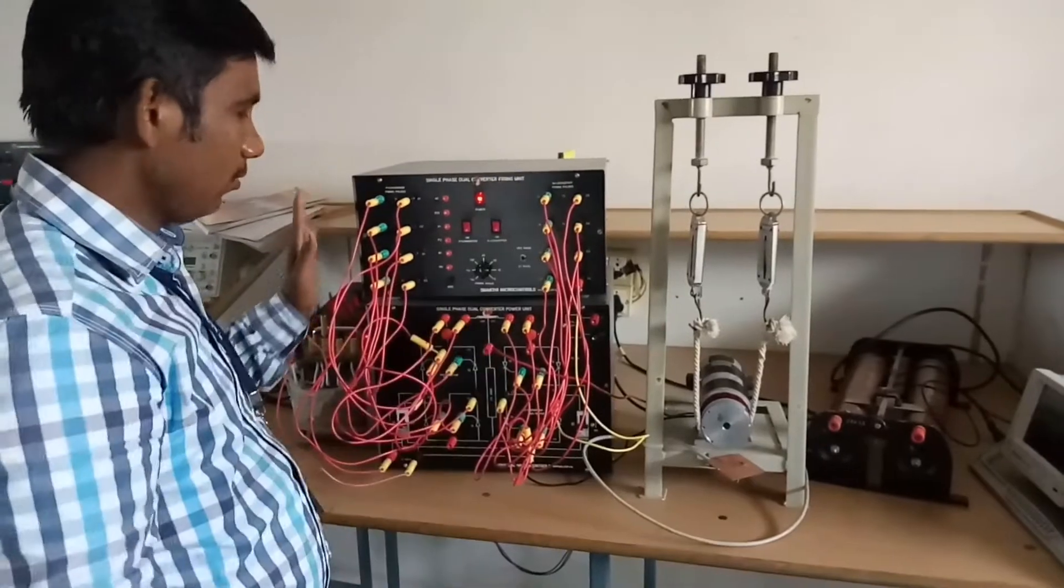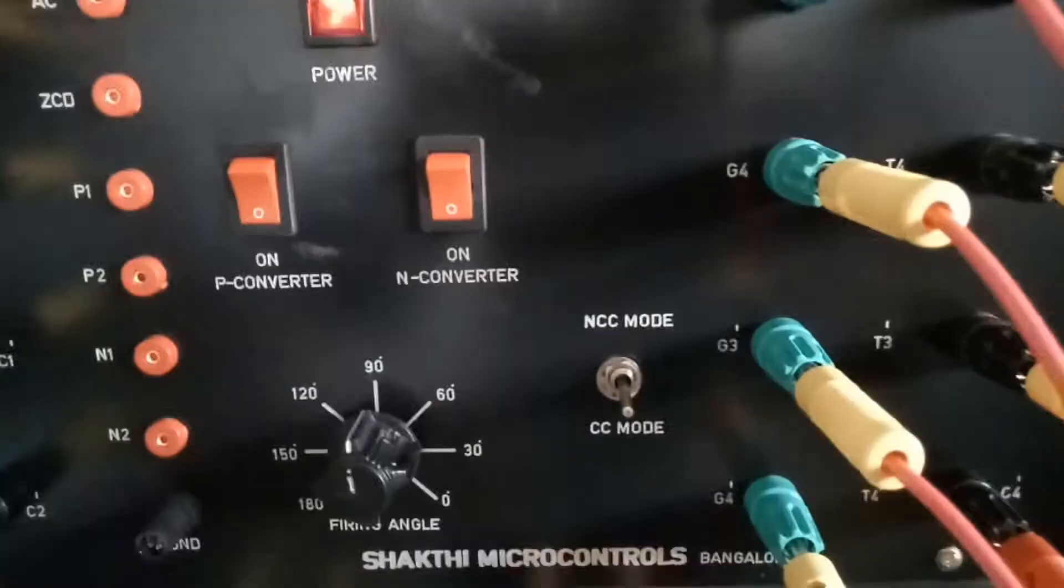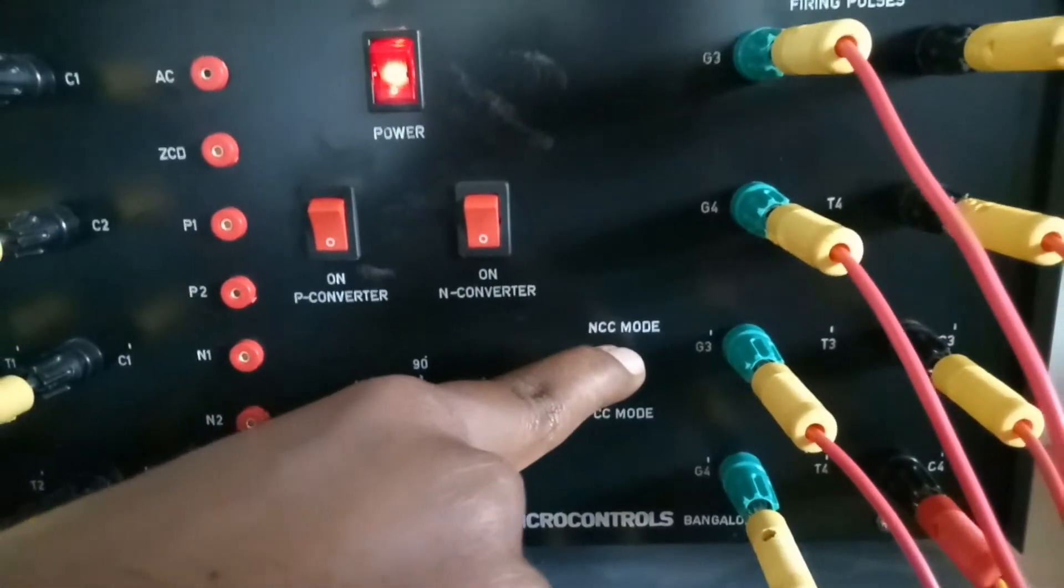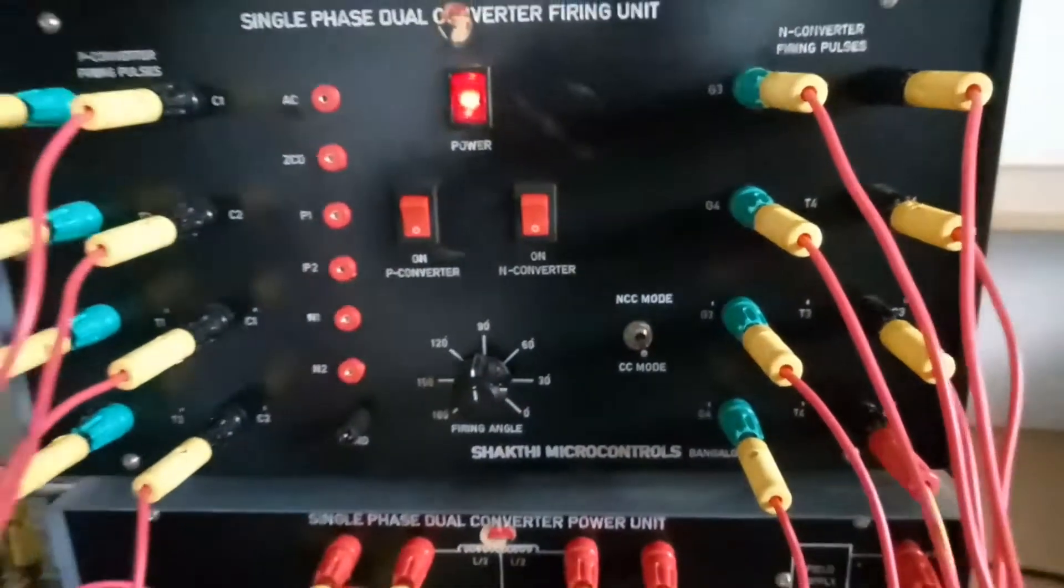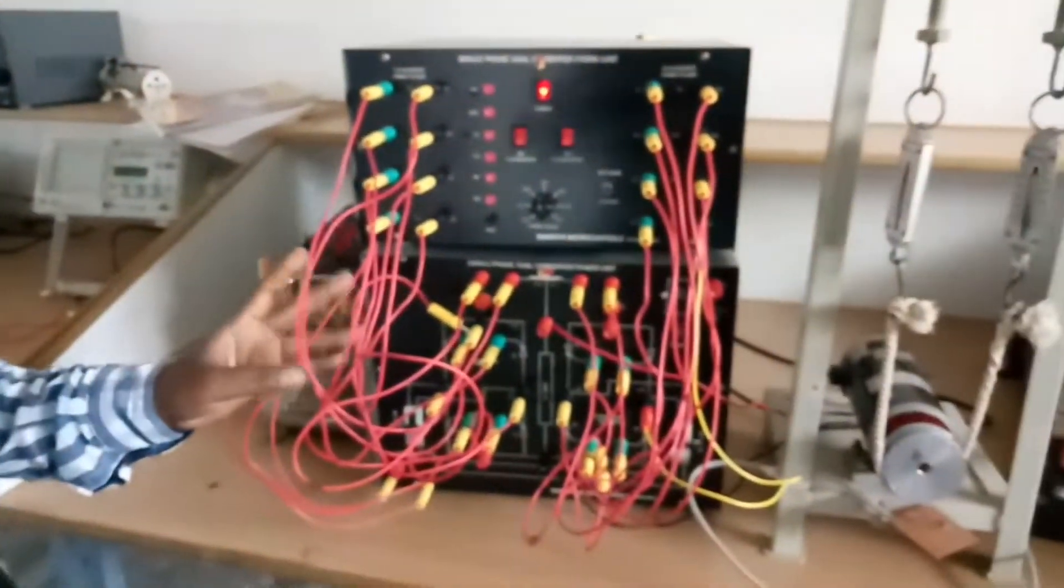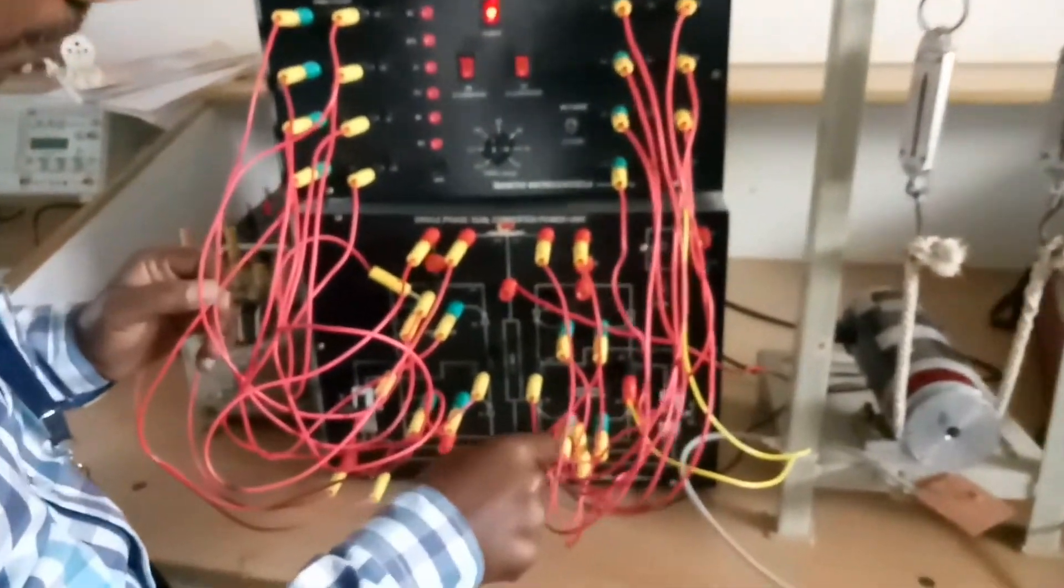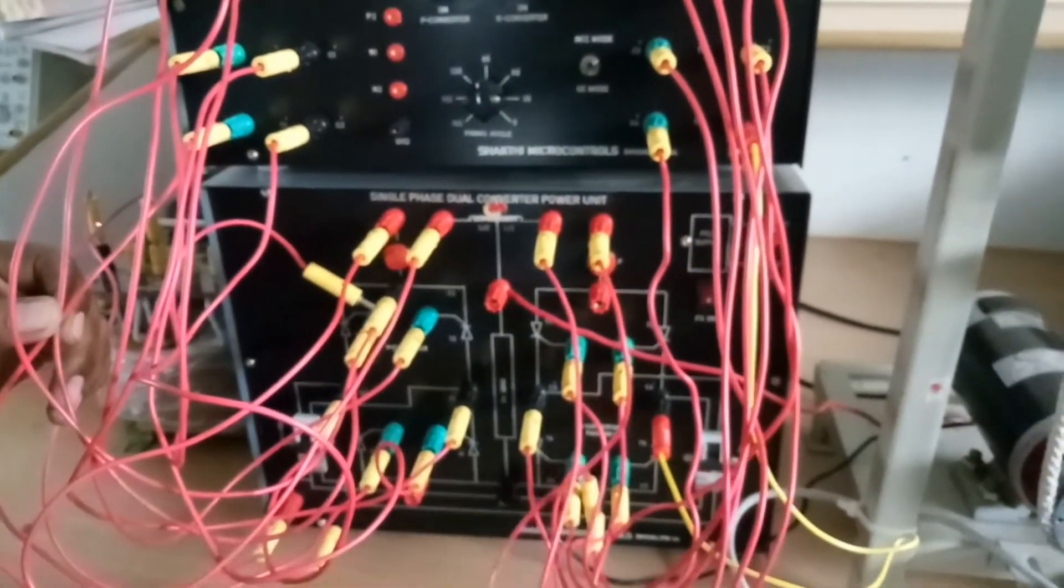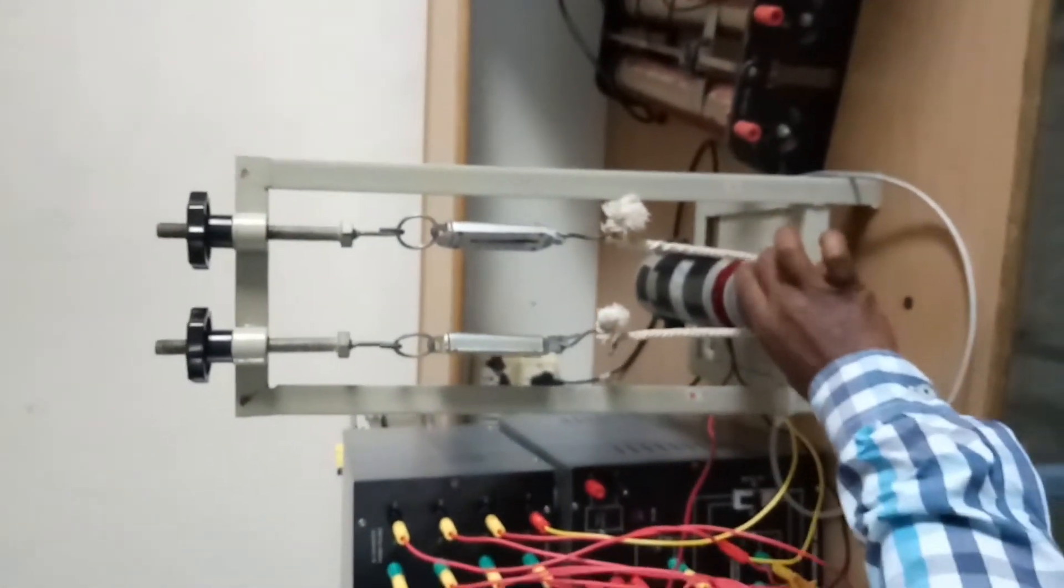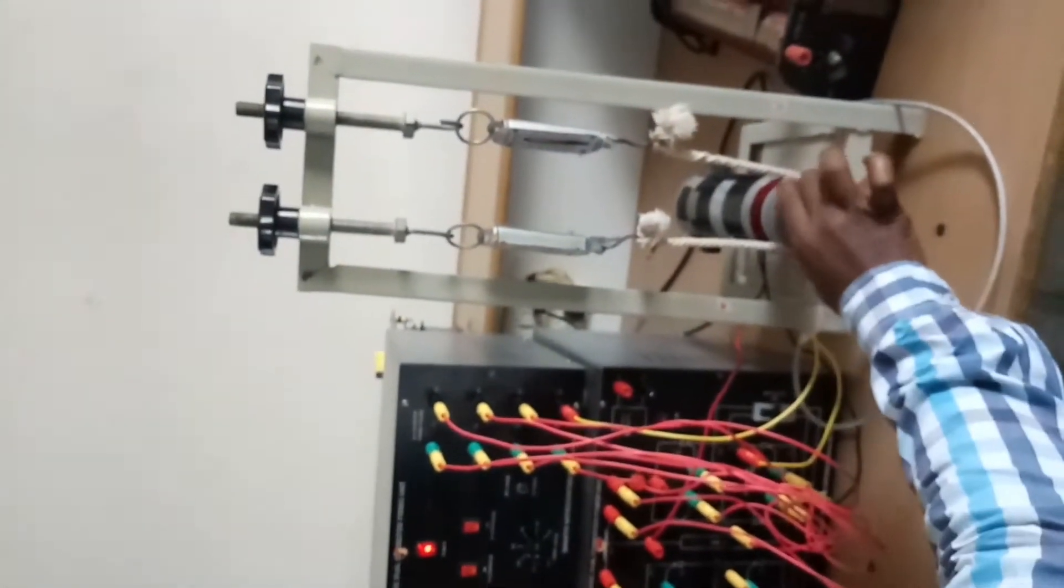We are providing it now. In circulating current mode, we are keeping the switch on circulating current mode. Now the two converters are connected anti-parallel. Now we are connecting the load in between the two converters. This is the motor we connected, a DC motor. We are connected for four quadrant operation possible for the DC motor.